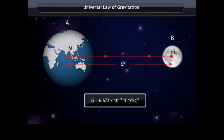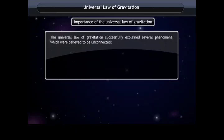The value of G was found by Henry Cavendish (1731–1810) using a sensitive balance. The accepted value of G is 6.673 × 10⁻¹¹ N·m²/kg².